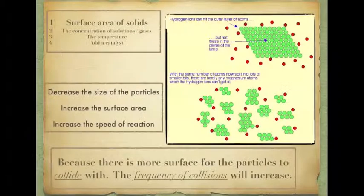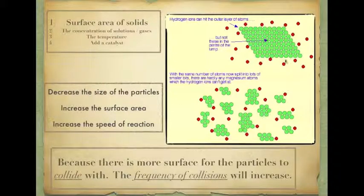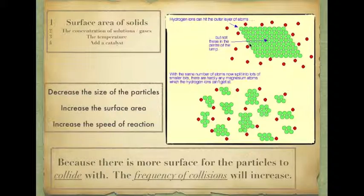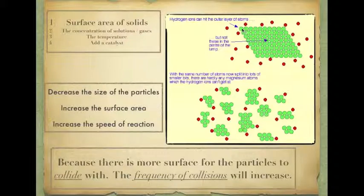The surface area of a solid is simply how much surface there is on a solid. I've got a 2D representation of a solid here — think of it as three dimensional too. Here is a 2D version of a lump of metal. We're going to react this metal with acid, which contains hydrogen ions — the things that actually react with metals. Now, if you have a large lump of metal, the only metal atoms that can react are those at the surface. The ones stuck in the middle cannot react.